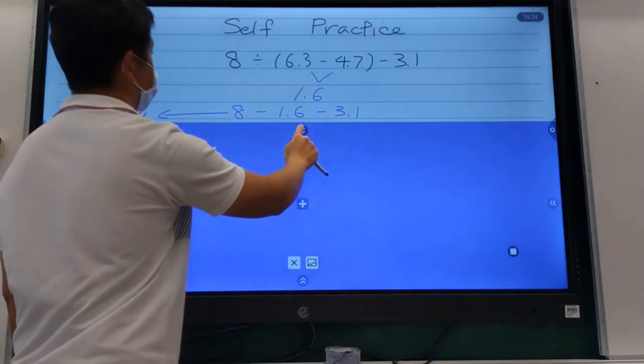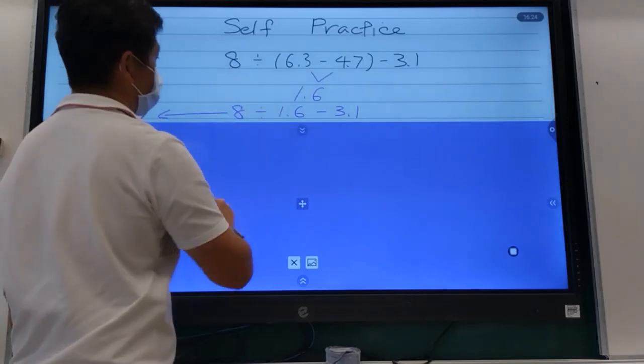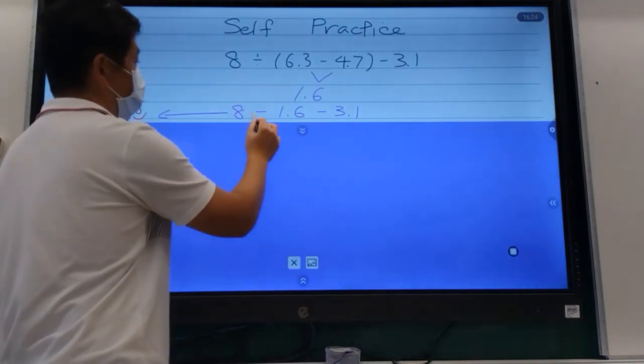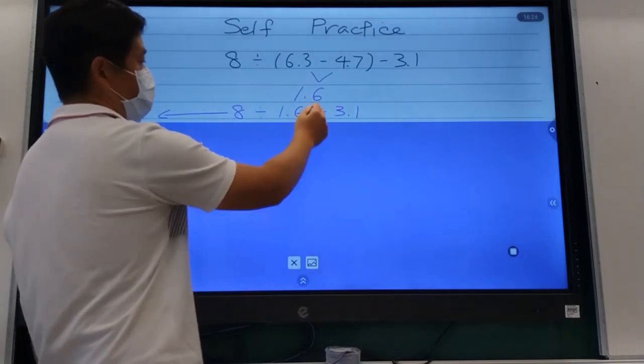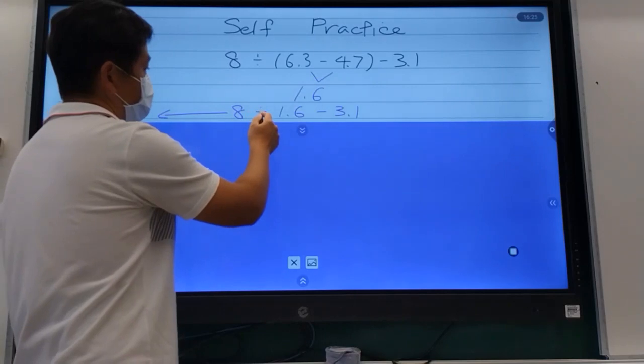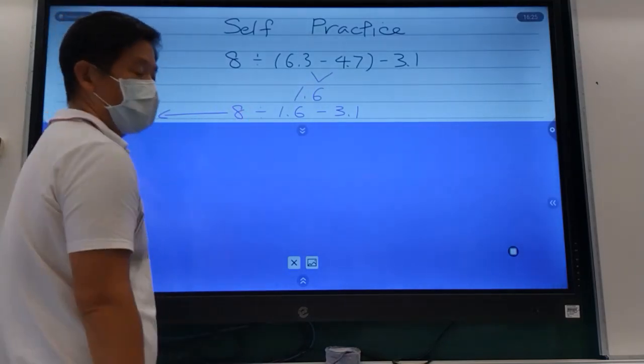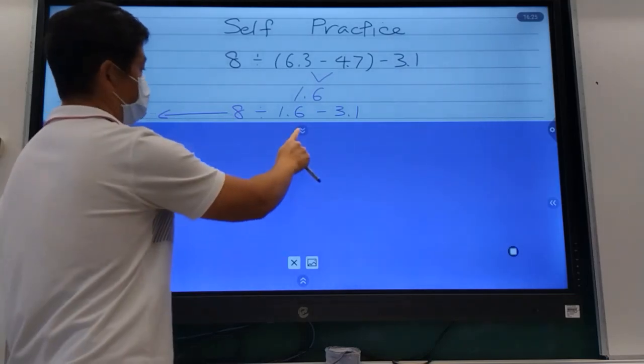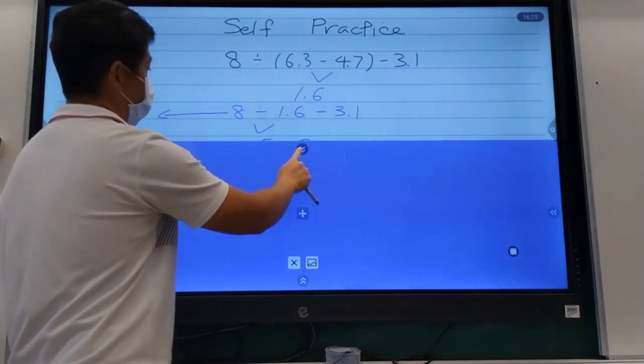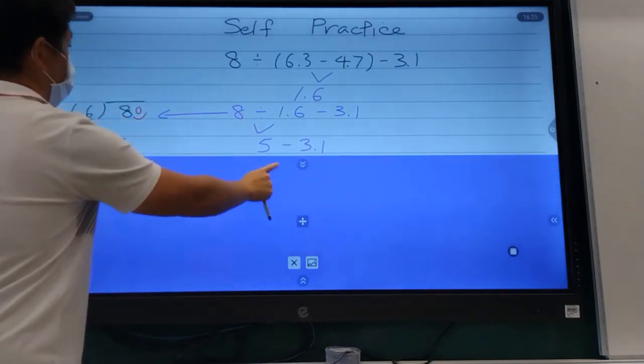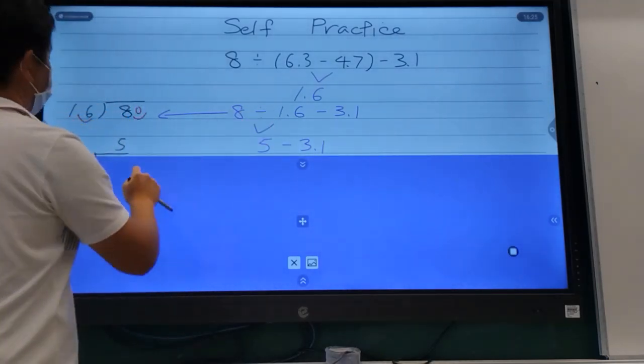The next thing would be to bring down the 8: 8 divided by 1.6 minus 3.1. Make sure you copy the question correctly. You don't want the 1.6 in your divisor, so I'm going to move the decimal over. It would be 80 divided by 16, and the quotient is 5.